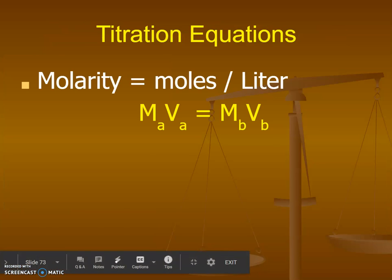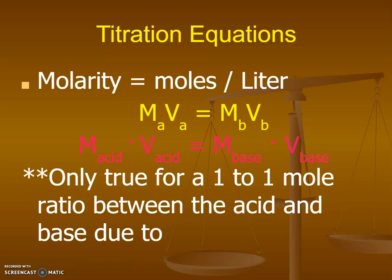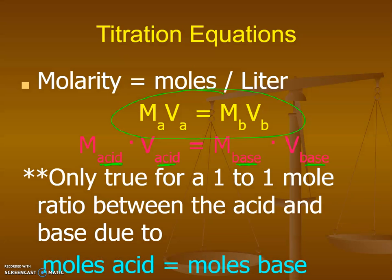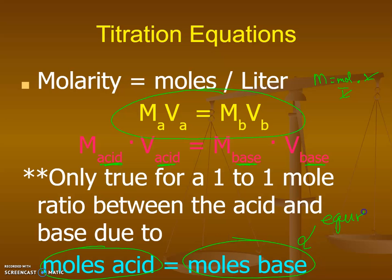So a titration equation that we're going to use is going to be very similar to what we saw with dilutions. And that is going to be MAVA equals MBVB, where MA is the molarity of your acid times the volume of your acid and the molarity of your base times the volume of your base. And what you'll see, just like we saw with our molarity by dilutions, is that molarity is your moles per liter. And when you multiply it by your volume, your liters are going to cancel out. So your moles of acid are going to equal your moles of base. That means that's your equivalence point.